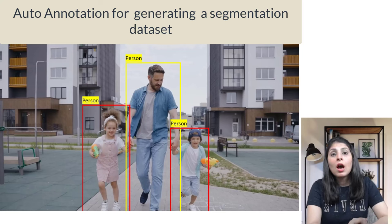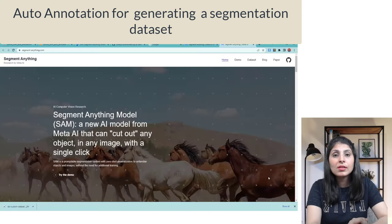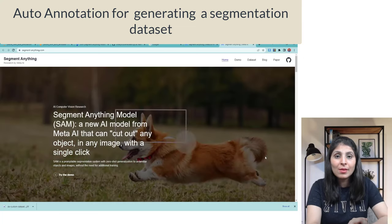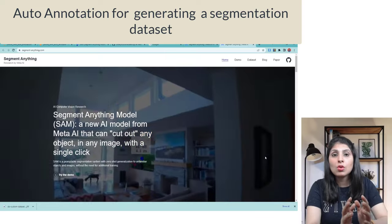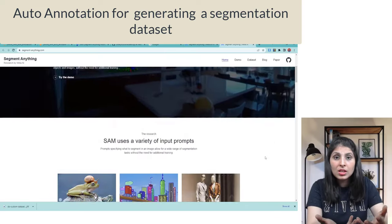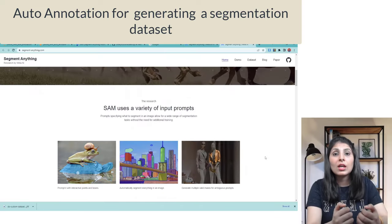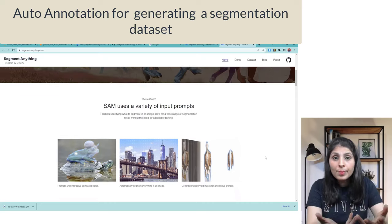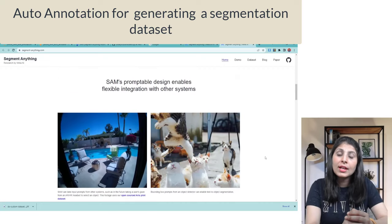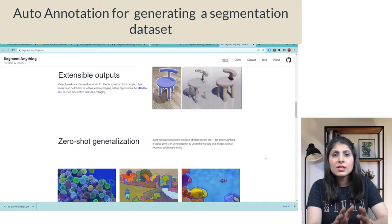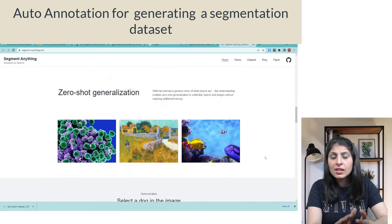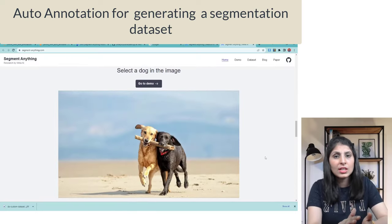In April 2023, Meta AI released their Segment Anything Model (SAM), which is an instance segmentation model. This model was trained on a very large dataset containing over 1 billion masks on 11 million images — the largest dataset for image segmentation to date.